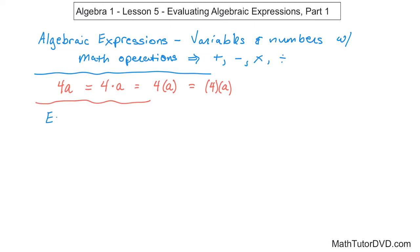Let's evaluate the following expressions if x is equal to 2, y is equal to 3, and z is equal to 4. So we're given the value of three variables: x is equal to 2, y is equal to 3, z is equal to 4. And what we're going to do is we're going to evaluate the following expressions.